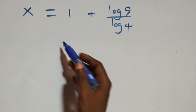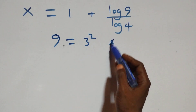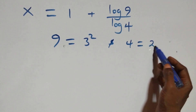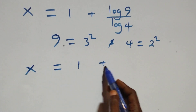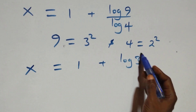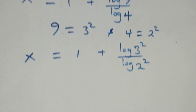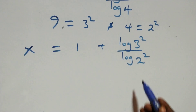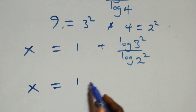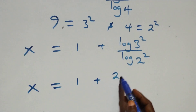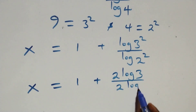Next, we express 9 as 3² and 4 as 2². So x = 1 + log(3²) / log(2²). Applying the power rule of logarithms, the exponents come down: x = 1 + 2·log3 / 2·log2.